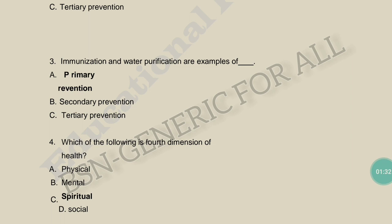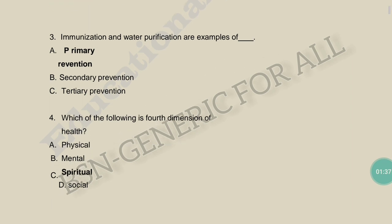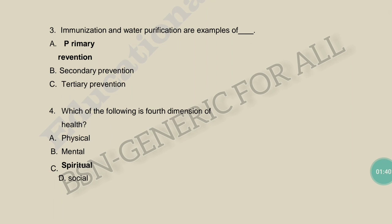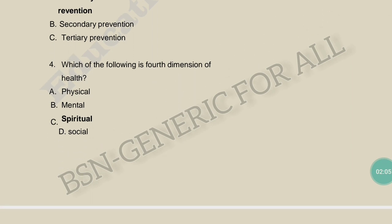Immunization and water purification — what type of prevention is this? This is primary prevention. For primary prevention we do things like immunization; for secondary prevention we do diagnostic testing; and tertiary prevention comes after the disease has occurred — that is the later stage of care.